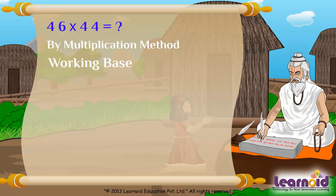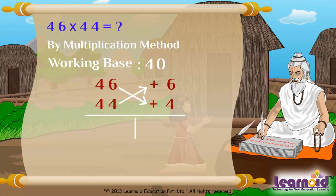Let's take working base 40. We will write surplus as plus 6 and plus 4. By cross addition we get 50 on left, and by vertical multiplication right side value will be 24.